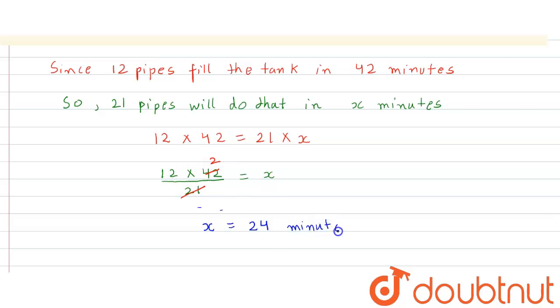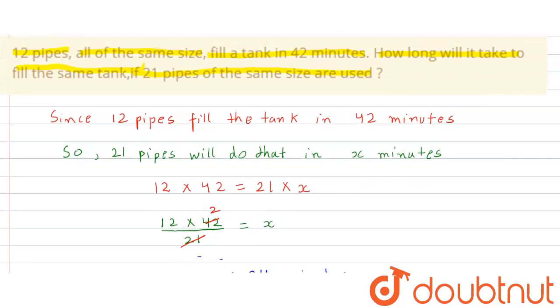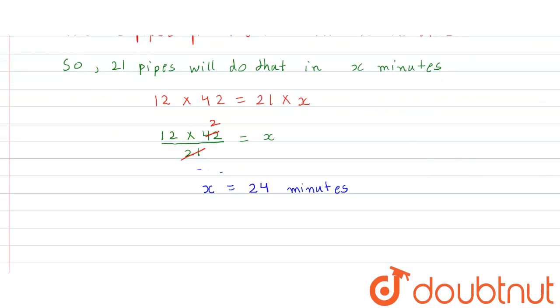So 24 minutes will take to fill the same tank if 21 pipes of the same size are used. Our answer is 24 minutes.